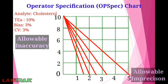The area above the first line (2-sigma) is unacceptable. The area between the first and second line is 2-sigma. The area between the second and third line is 3-sigma. The area between the third and fourth line is 4-sigma. The area between the fourth and fifth line is 5-sigma. The area below the fifth line is the 6-sigma zone.